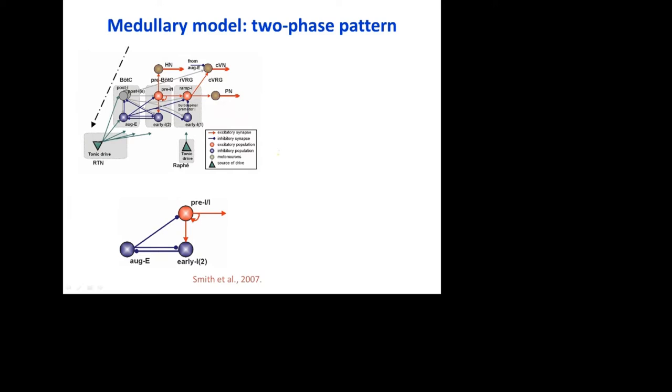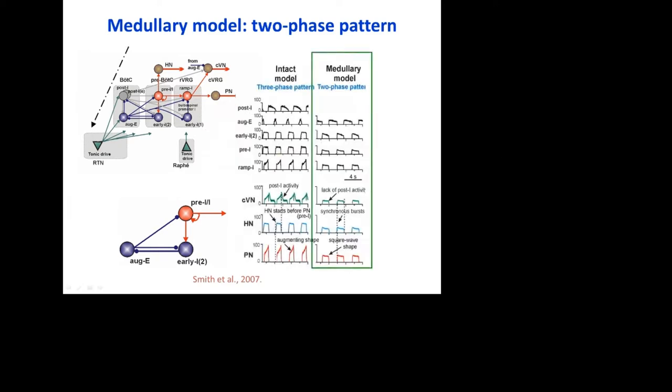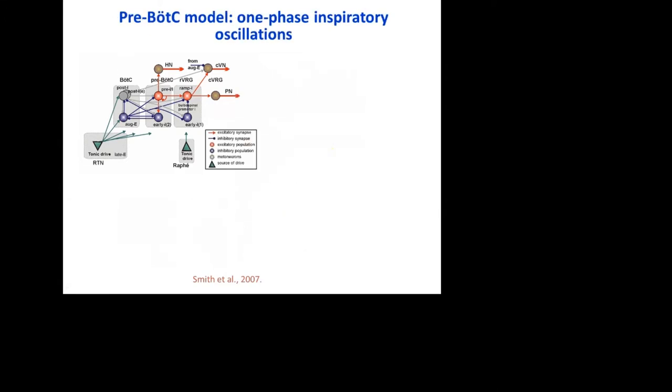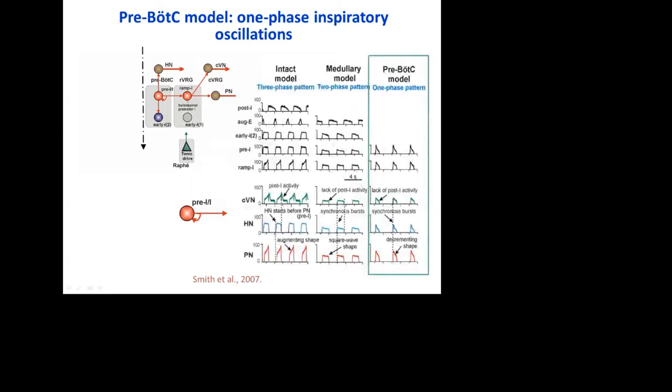After cutting the pons, the drive to post-I population disappears, and it gets completely silenced. Accordingly, post-I component is no longer present in central vagus nerve activity. Our core circuitry gets reduced to three populations. We don't see aug-E activity in the Bötzinger complex because aug-E neurons change their pattern to decrementing. If we cut also Bötzinger complex, the only functioning population that remains is excitatory pre-II in pre-Bötzinger complex. It generates endogenous bursting based on the recurrent excitation. We don't have any expiratory activity in this regime whatsoever.